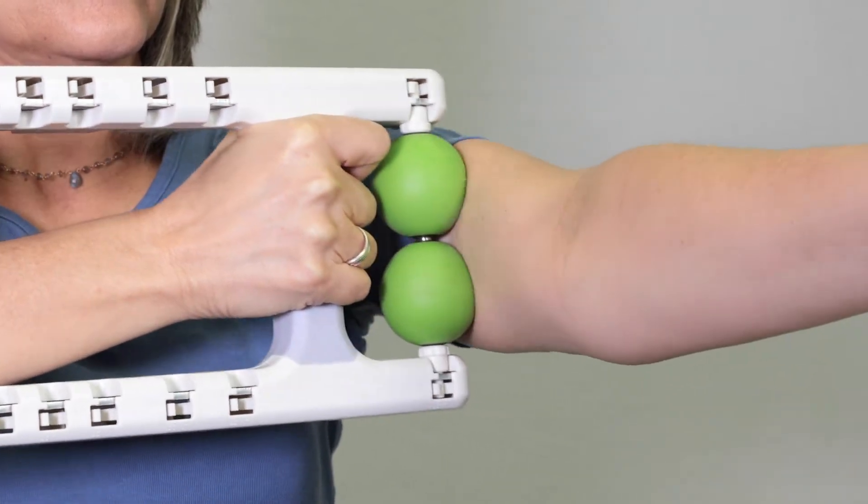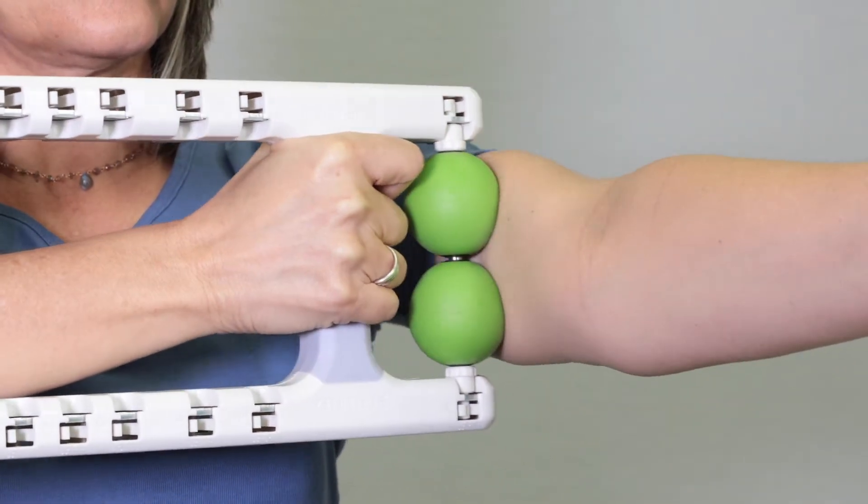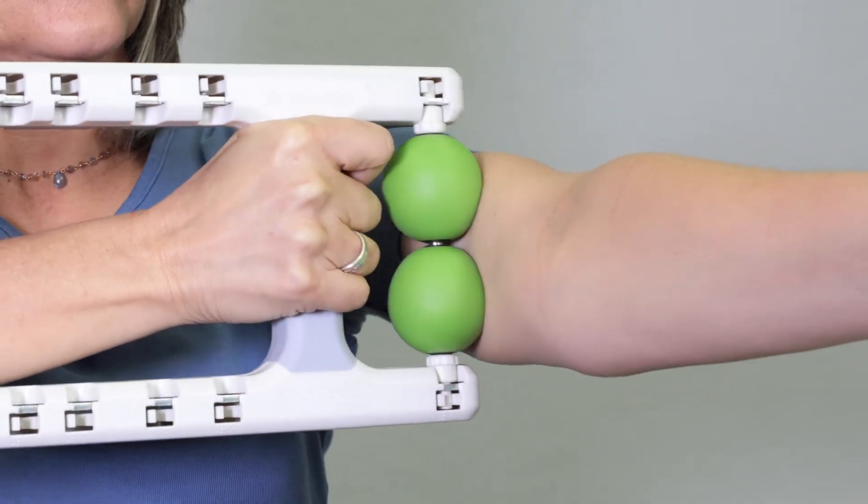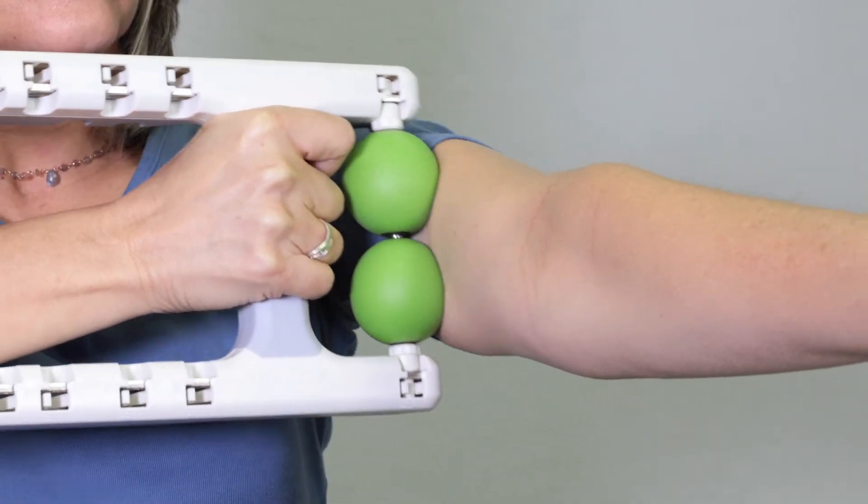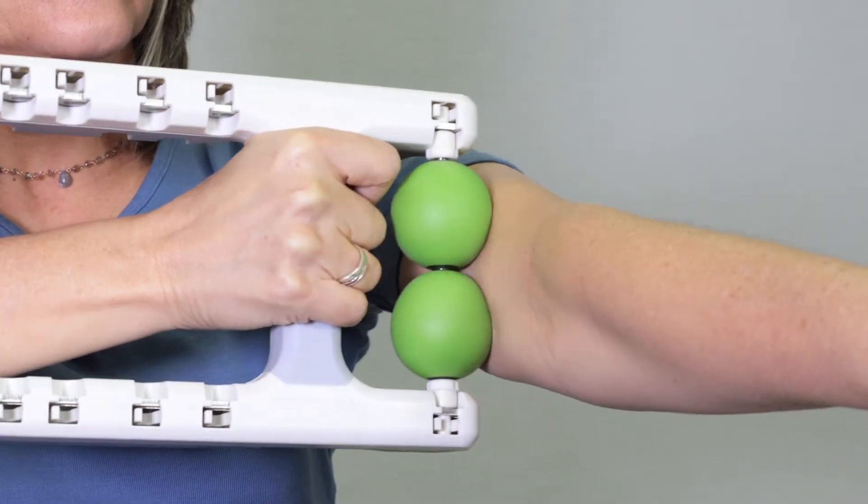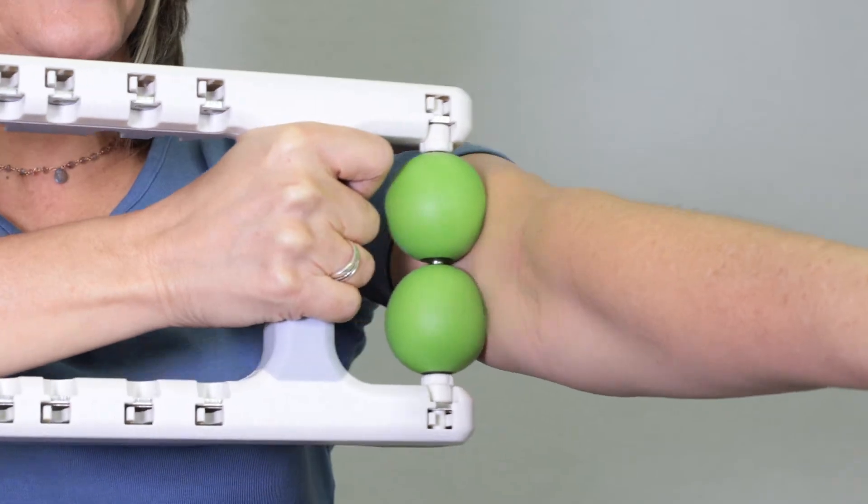Guiding with your opposite arm, slowly roll your biceps region with one or two gel balls. Explore rolling the entire front of your upper arm region from your elbow to your shoulder. Keep your wrist in neutral.